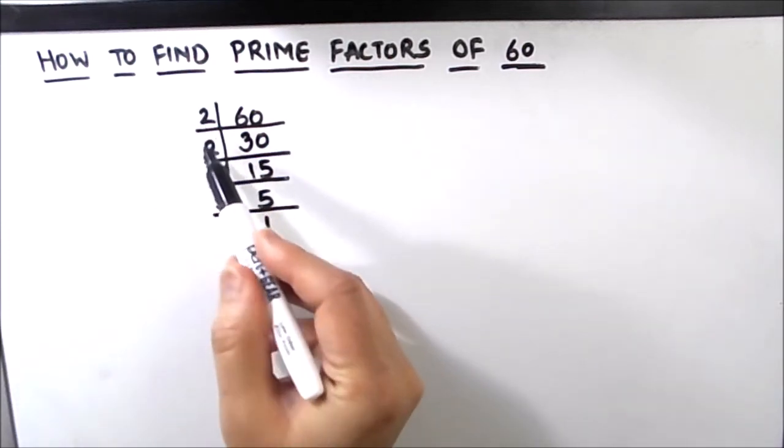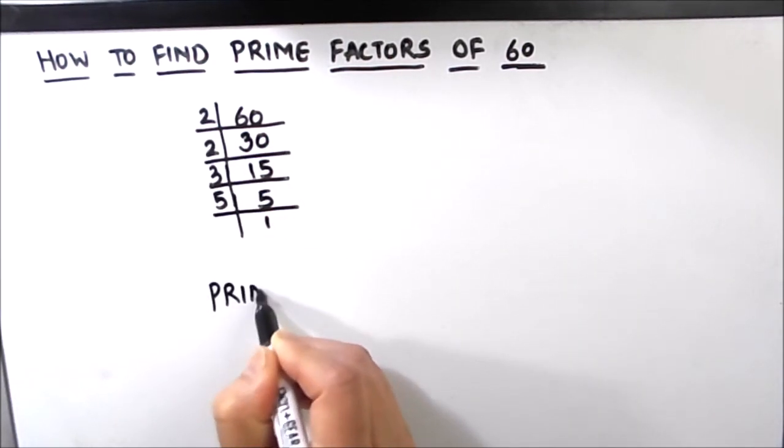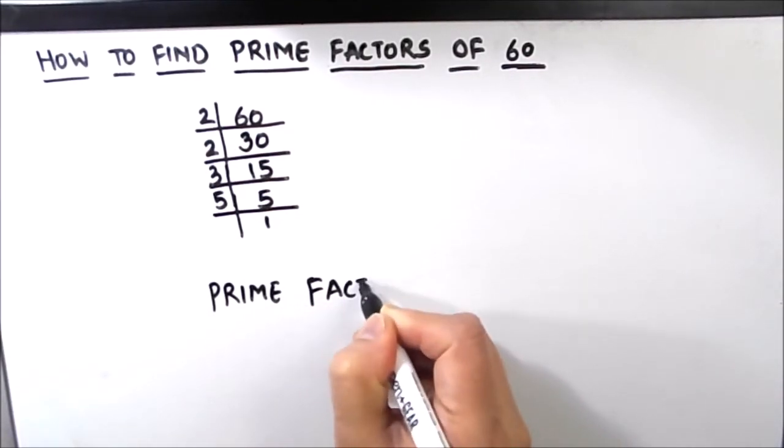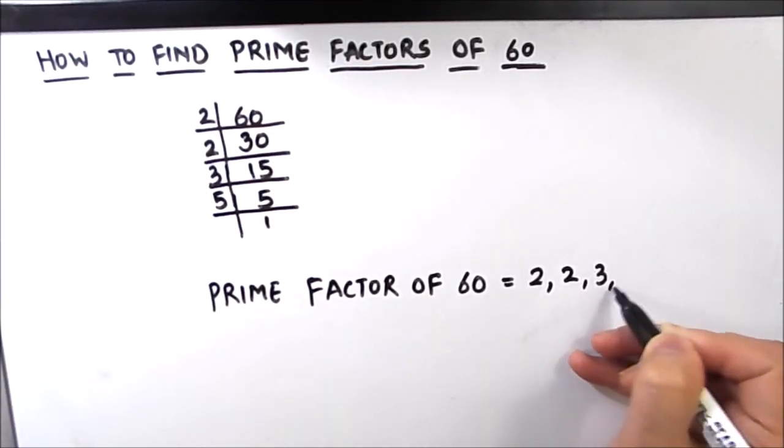Now all the numbers which are on the left hand side of the ladder are the prime factors of this number and all these numbers are prime numbers. So the prime factors of number 60 are 2, 2, 3 and 5.